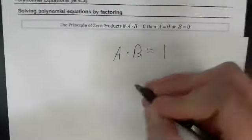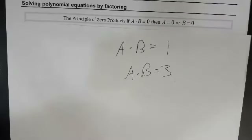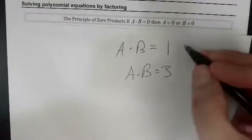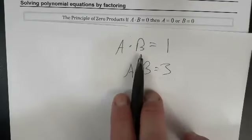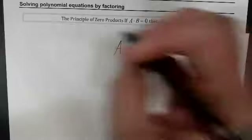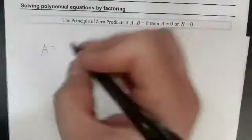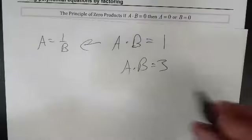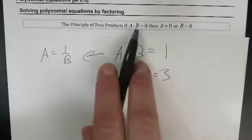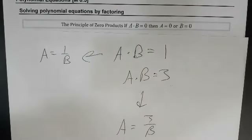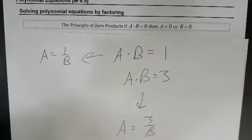What if a times b equals some other number — can we say anything specific about a and b? The short answer is: not really. There is nothing definitive we can say. We can rearrange the equation, but we're still going to have two variables. There's a very special property about multiplying by zero and equaling zero that makes this possible. This does not work with any other number but zero.